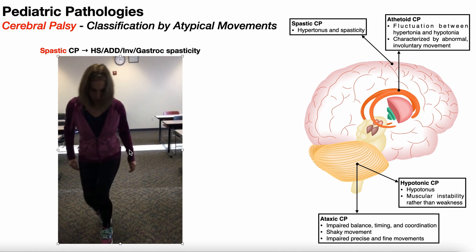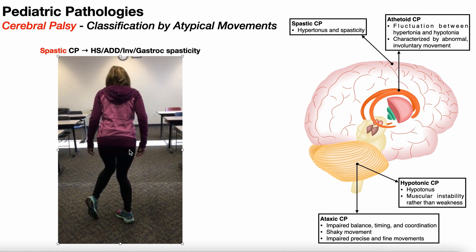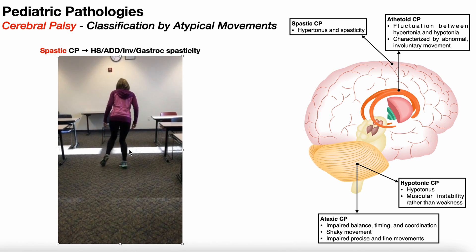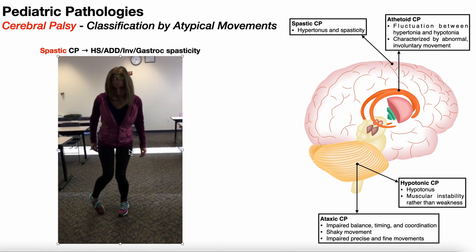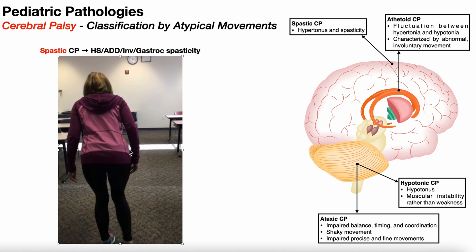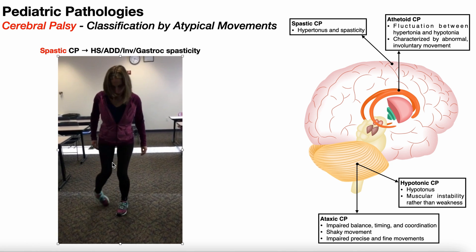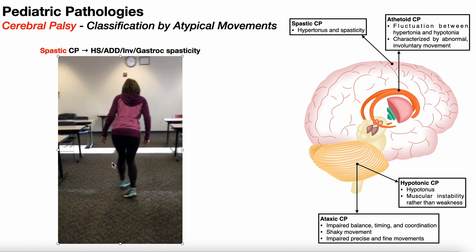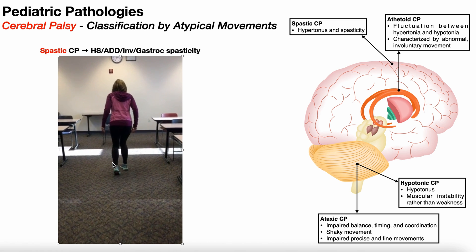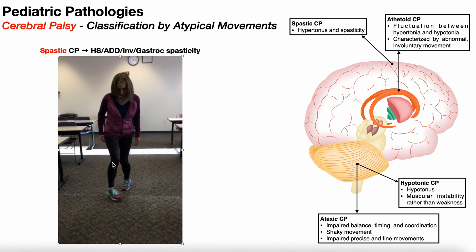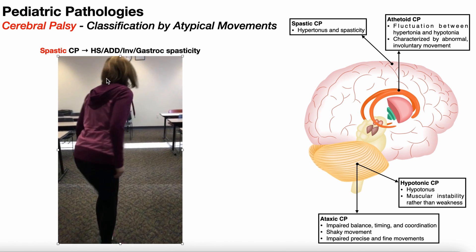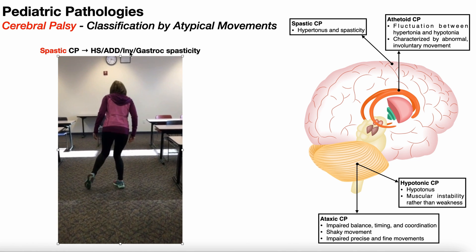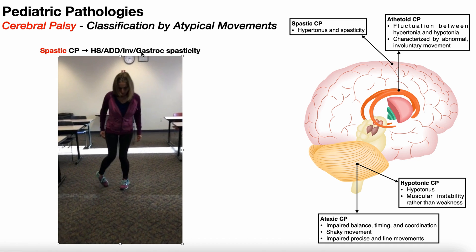Somebody with a level five GMFM score may not be able to walk at all and would be confined to a wheelchair. Here, this person has both a crouched gait and a scissoring gait — where the advancing leg crosses over the midline in front of the other leg. This is likely due to spasticity in the hamstrings, adductors, subtalar inverters like tibialis posterior, and the gastrocnemius.